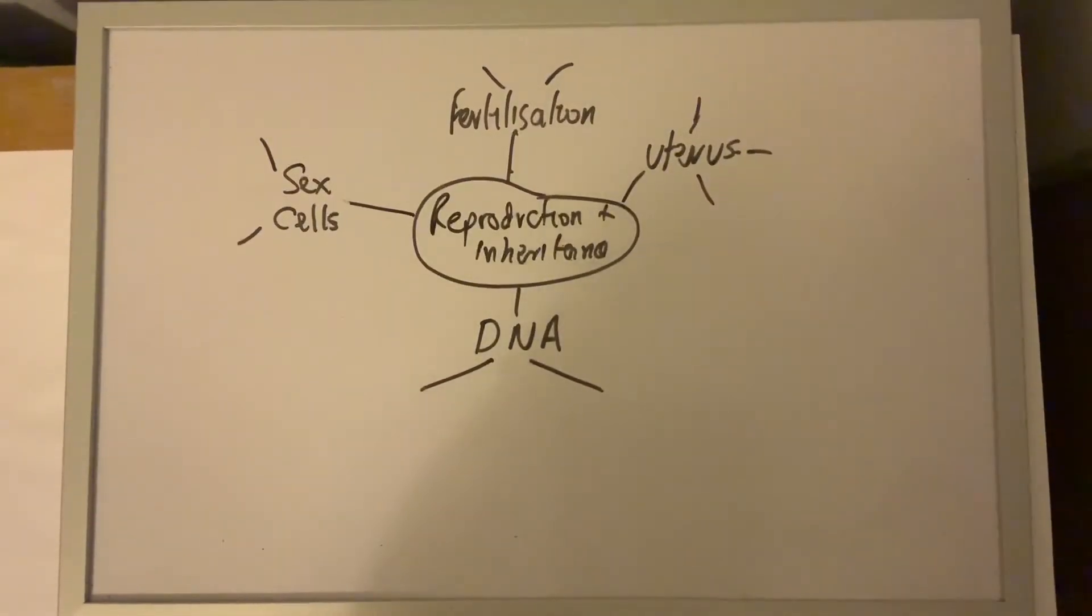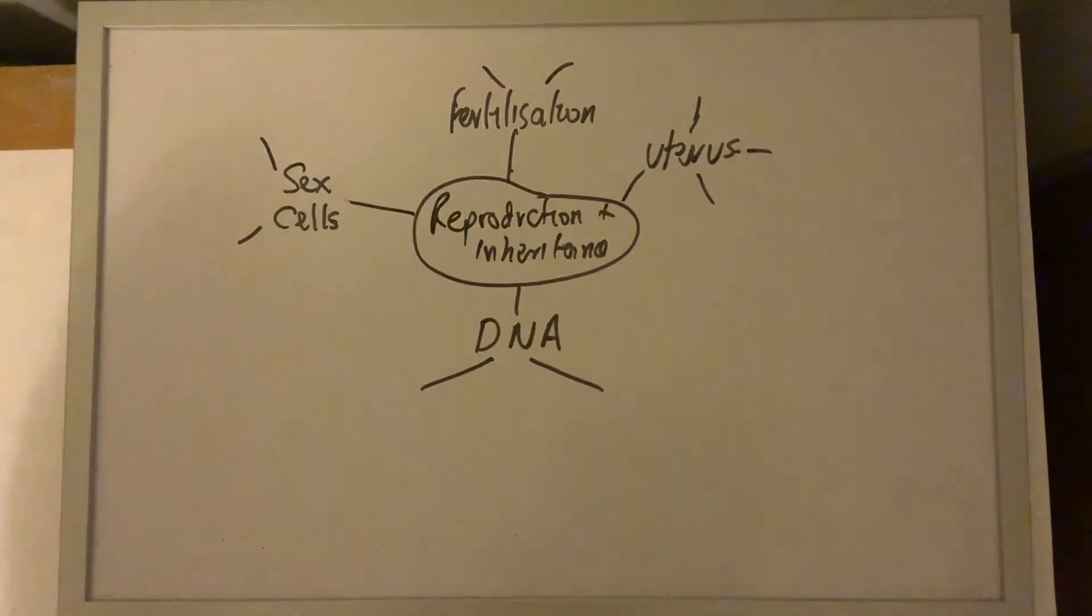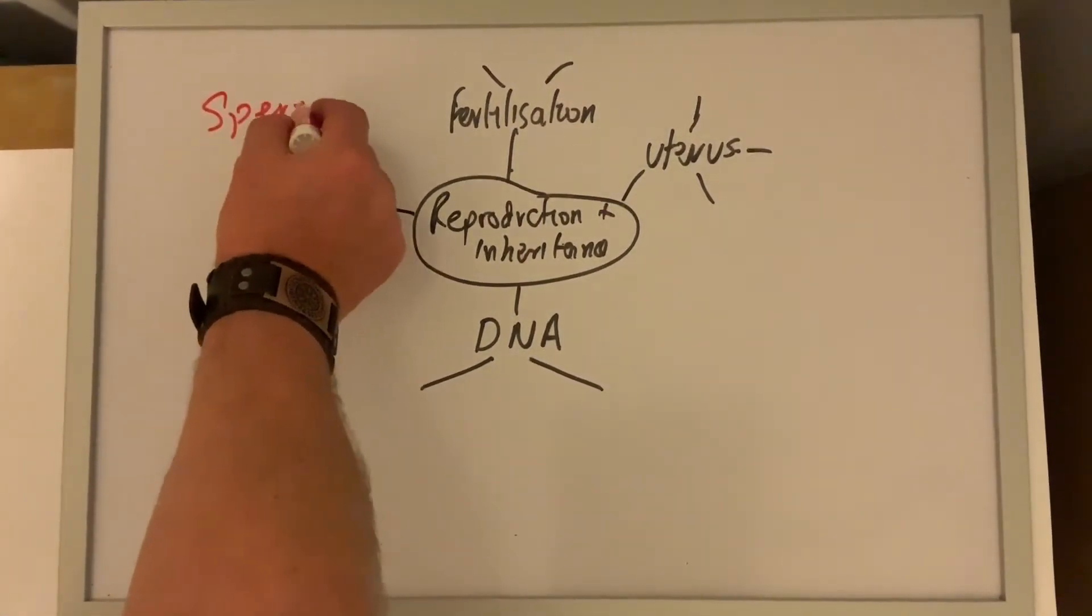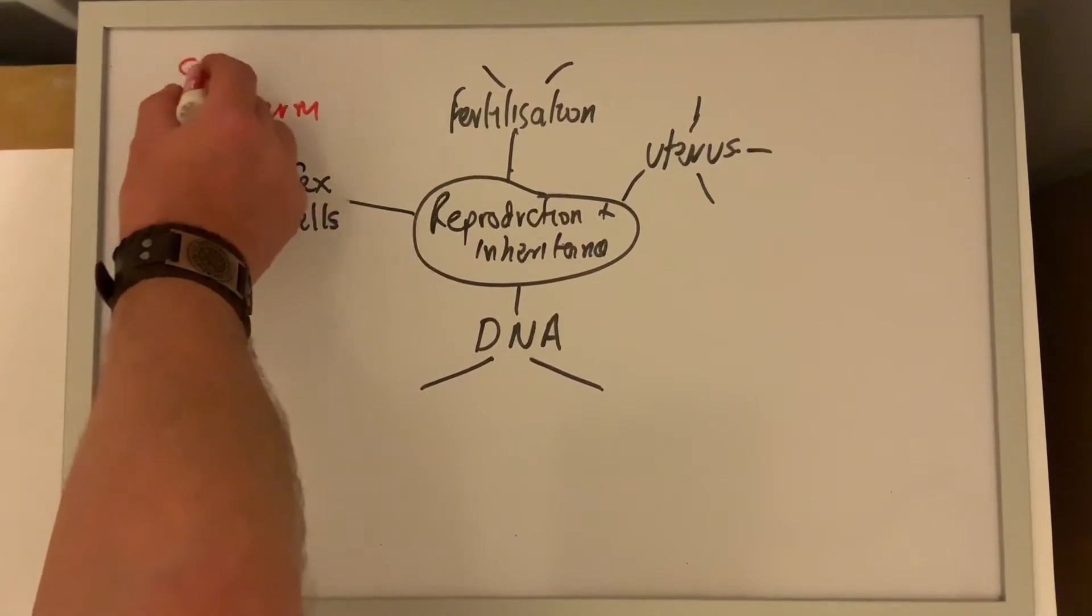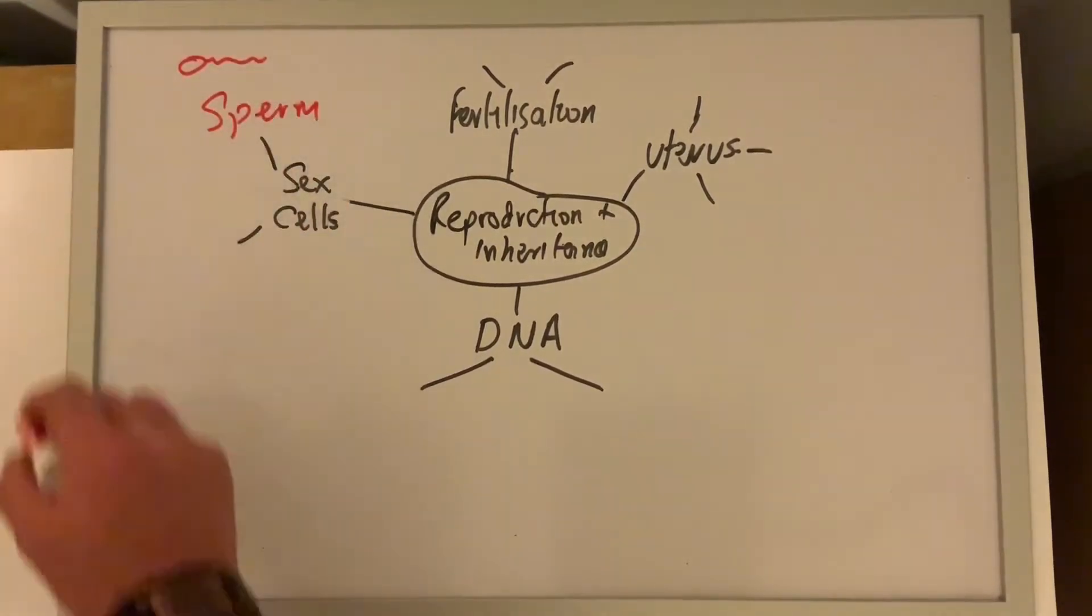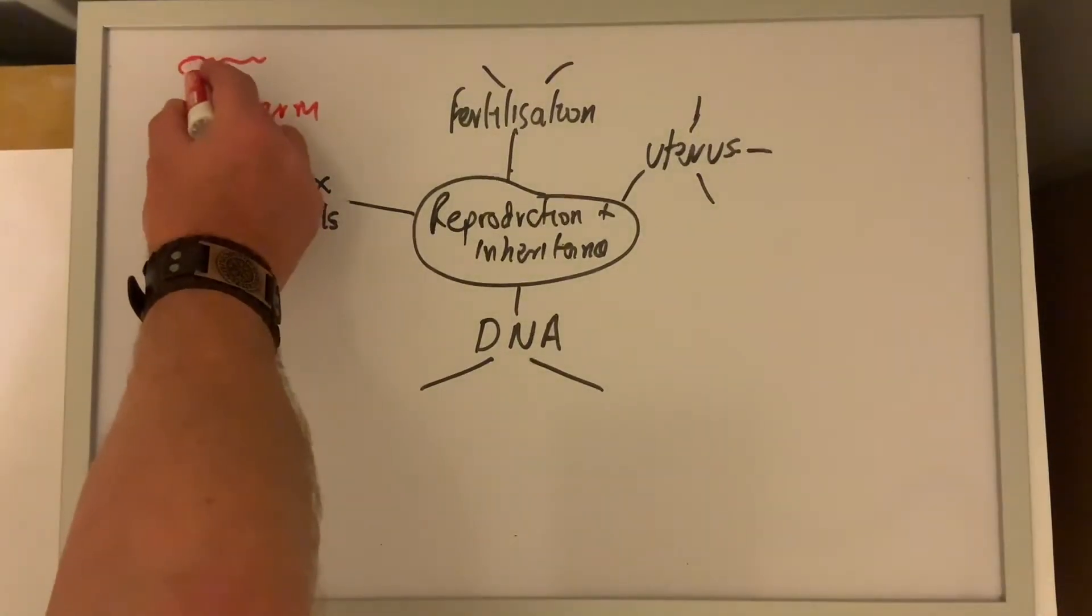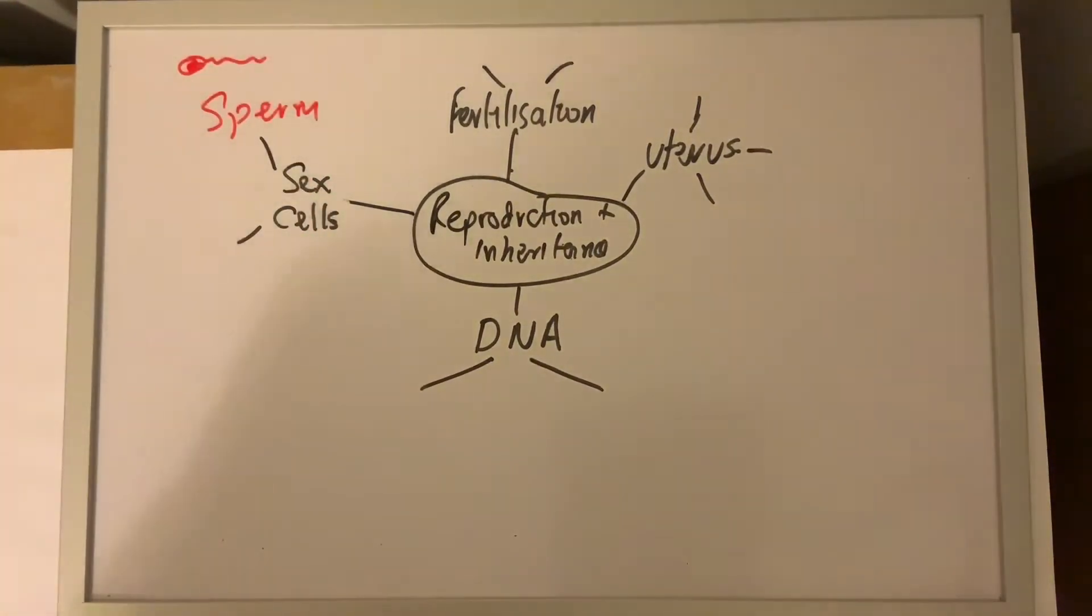The first thing we need to talk about is the sex cells. In a male, it's called a sperm. It actually looks like a little tadpole, a tail to help it swim, and very little cytoplasm, just a large nucleus. The head is designed to be able to break through into the egg.